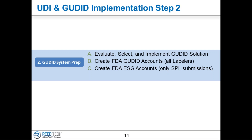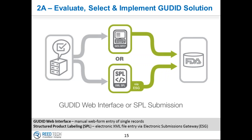We were at a good breakpoint. Maybe we'll stop along each step and field some of the major questions. This step we're about ready to talk about has to do with preparing the GoodID submission system. The FDA has established two major avenues to report data into this global unique device identifier database, specifically called GoodID. The first one has to do with manual entry.